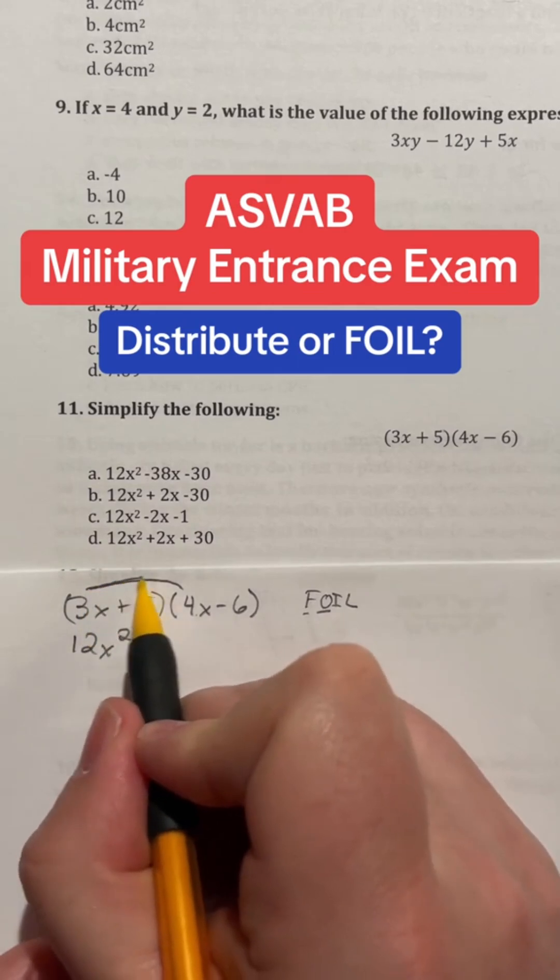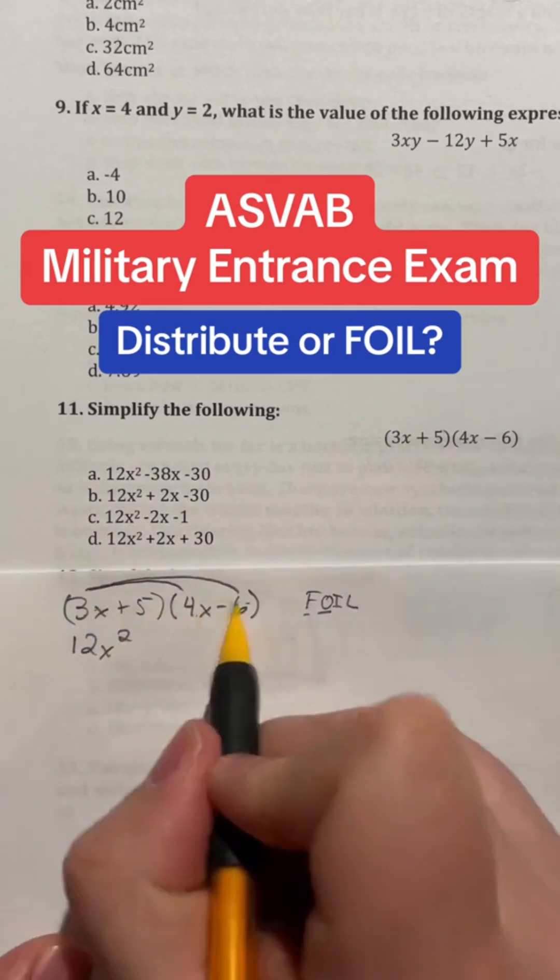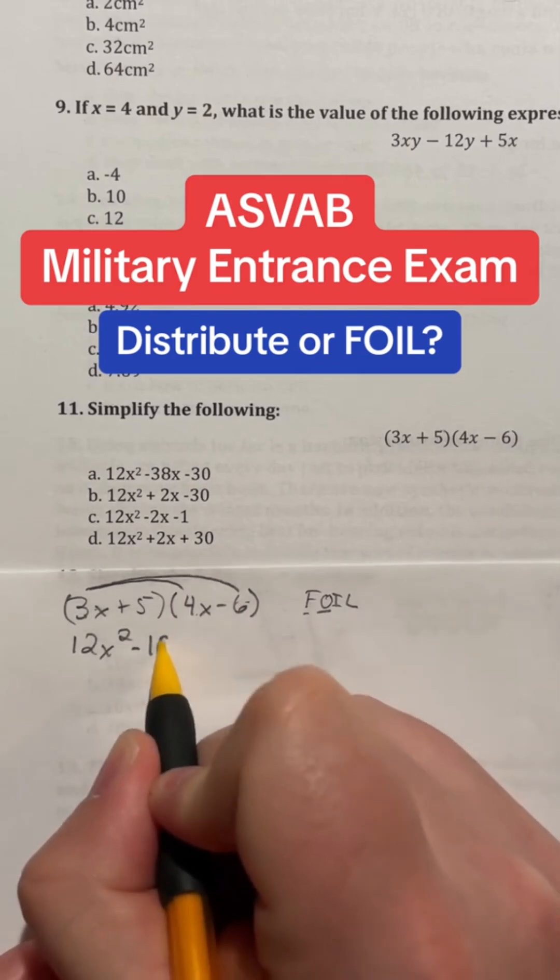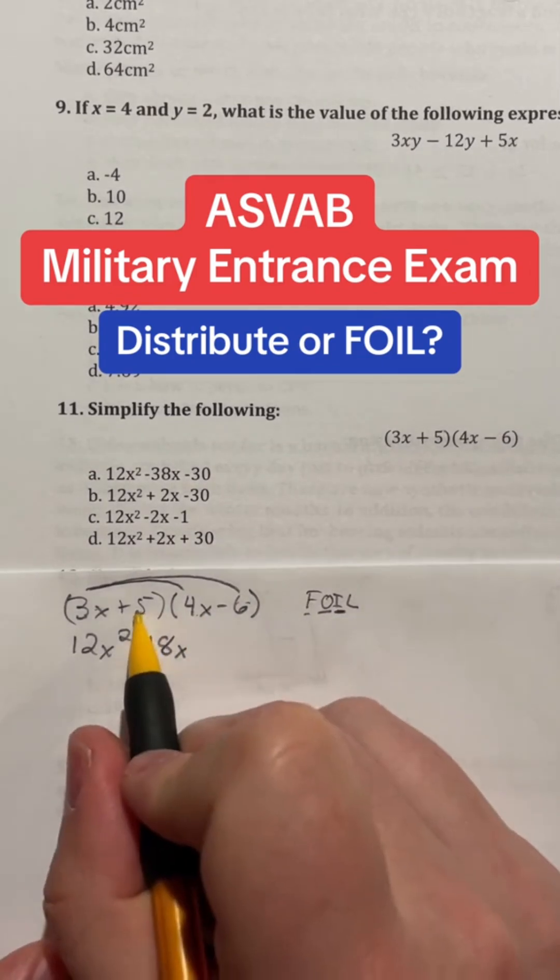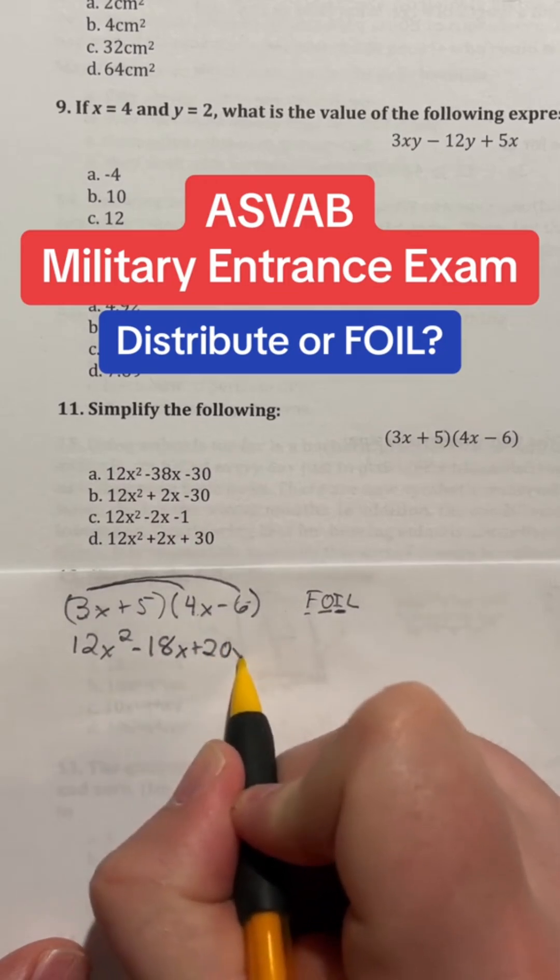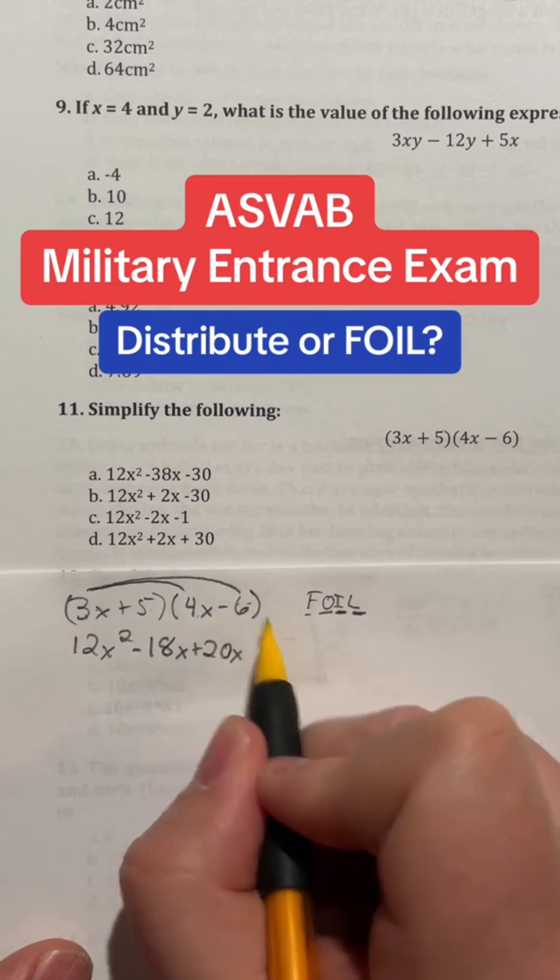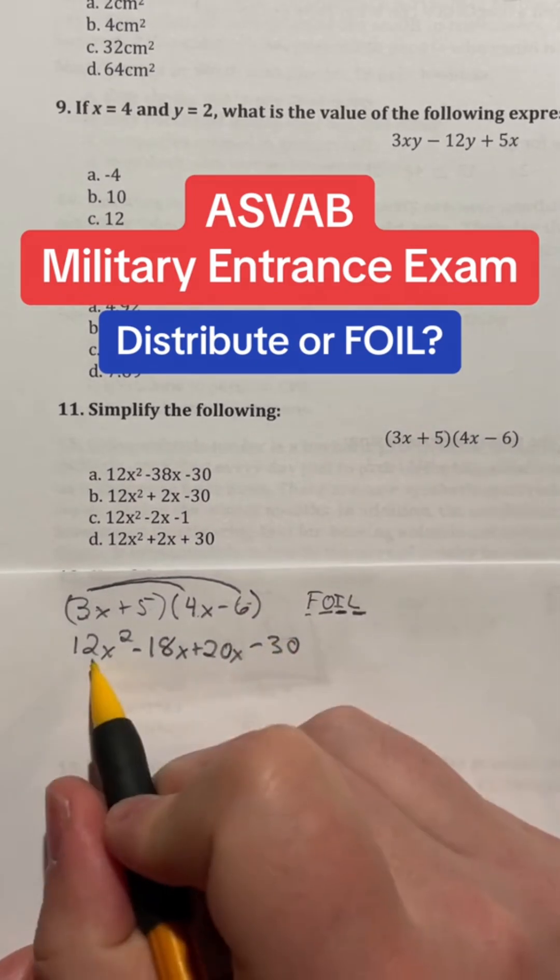Then we have 5 times the 4x by doing our inside terms. So 5 times 4x is going to give me a positive 20x. And then we have our last terms which is going to be 5 times the negative 6 giving me negative 30.